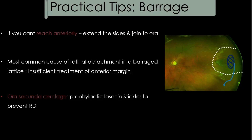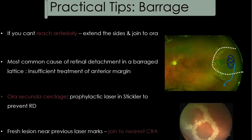In patients such as those with Stickler syndrome who are prone to retinal detachment, some authors suggest performing an ora serrata circlage — prophylactic laser 360 degrees, essentially creating a second ora. For patients who develop a fresh lattice near a previously existing lesion, the laser marks can simply be extended to the previous old laser marks.